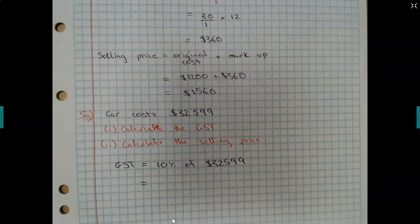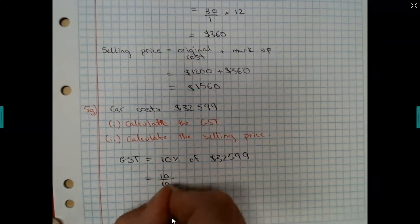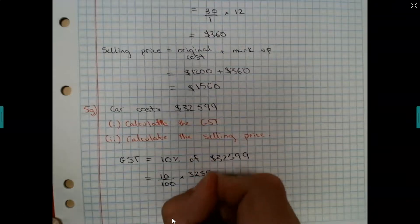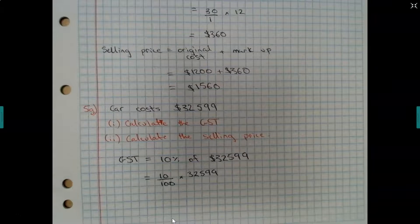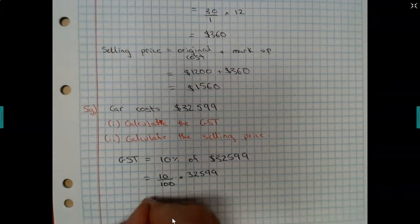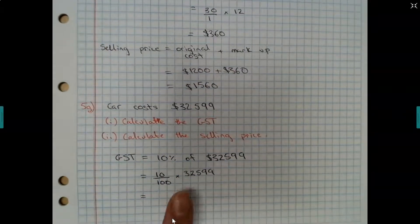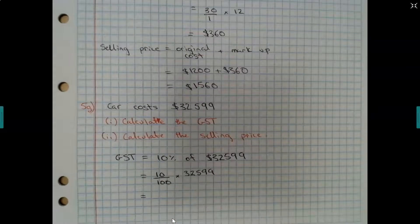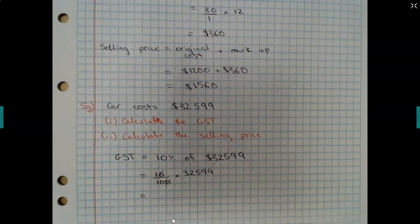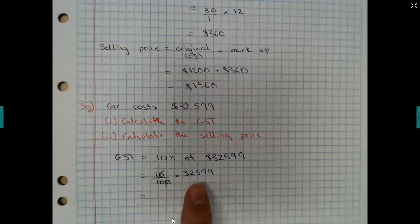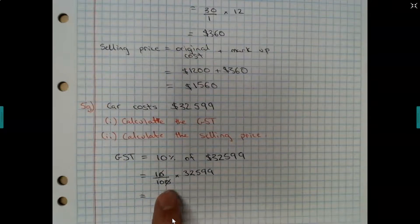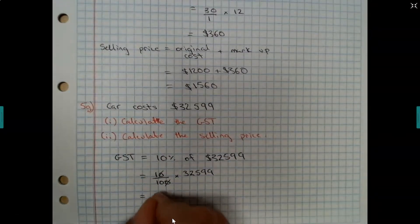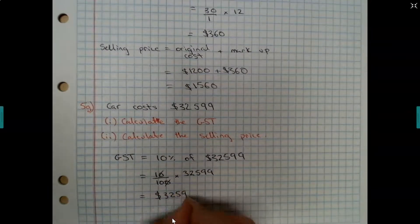So GST is equal to 10% of $32,599. Let's write this in fractional form. 10% can be written as 10 over 100, times $32,599, which is equal to... 10 over 100 is the same as 1 over 10. I can cancel these zeros. 1 over 10. If I multiply 1 over 10 by $32,599, pretty much I'm just dividing that value by 10. Therefore, I'm just moving the decimal place one position. So therefore this will be $3,259.90.